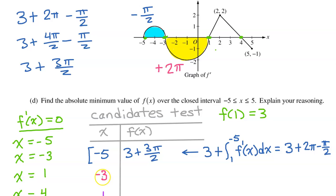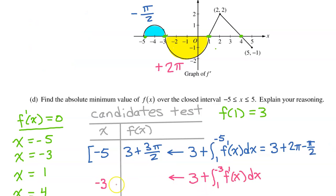Let's move on to f at negative 3. f at negative 3 will equal the initial value of 3 plus the integral of f prime from 1 to negative 3. So here's 1 and here's negative 3. So the value of f at negative 3 will be the initial value of 3 plus 2 pi.